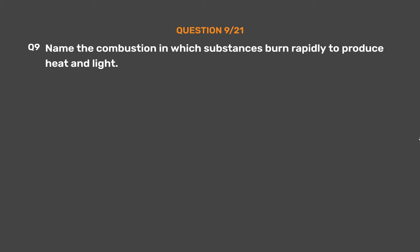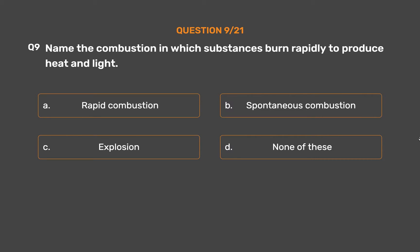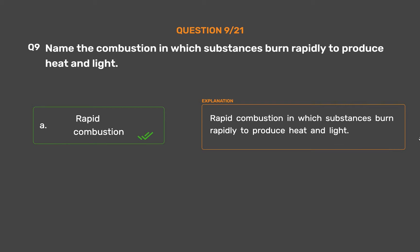Question number 9: Name the combustion in which substances burn rapidly to produce heat and light. Option A: Rapid combustion. Option B: Spontaneous combustion. Option C: Explosion. Option D: None of these. The correct answer is Option A: Rapid combustion. Rapid combustion is that in which substances burn rapidly to produce heat and light.